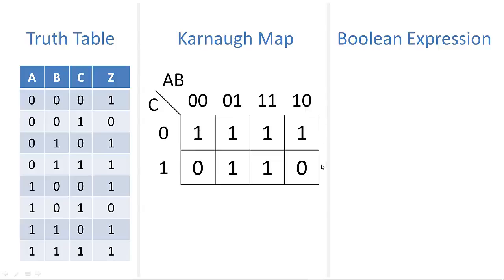Then we populate all of the output values. We can see we have two zeros. One where A and B are zeros and C is 1, and another at 1, 0, 1. So that's our Karnaugh map with the input values and output values.